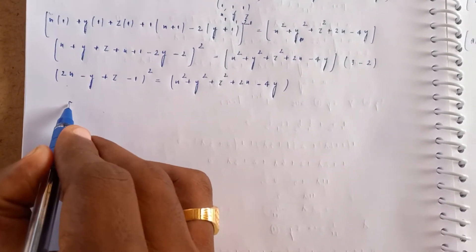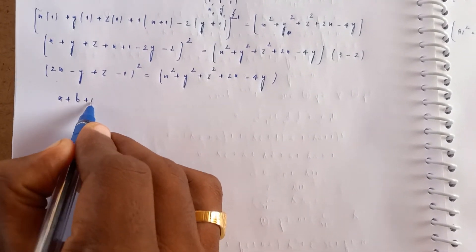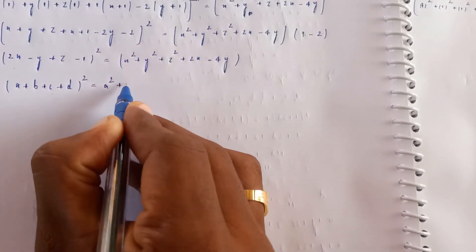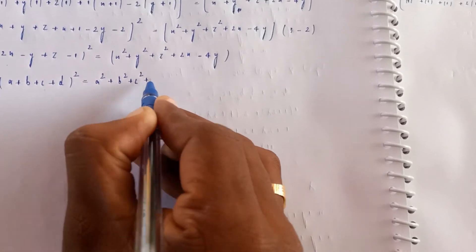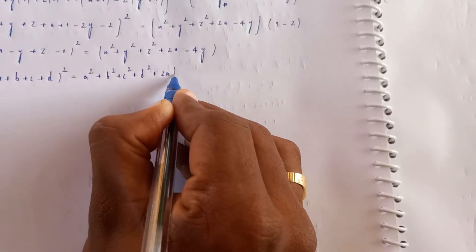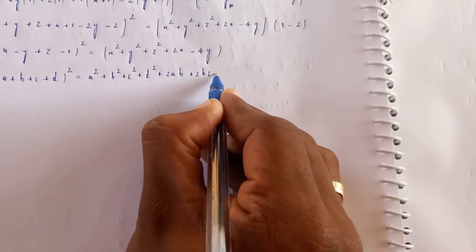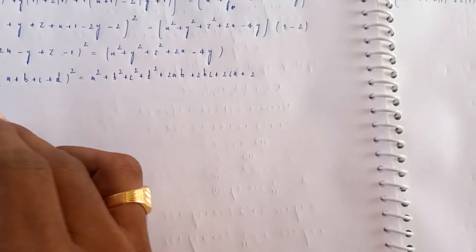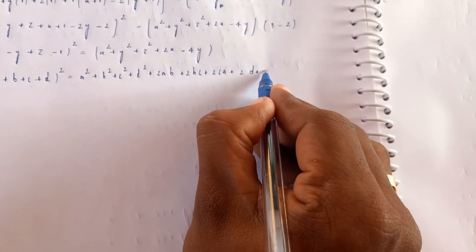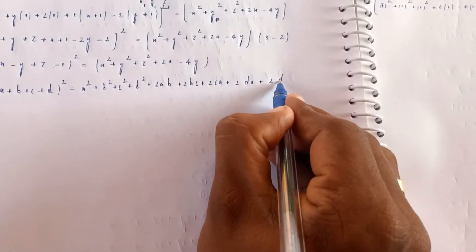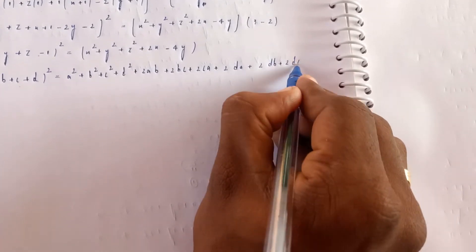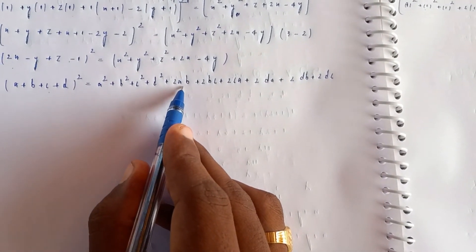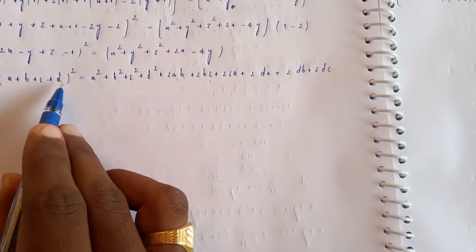We apply the (a + b + c + d)² formula: a² + b² + c² + d² + 2ab + 2bc + 2cd + 2da + 2db + 2dc. Where a = 2x, b = y, c = z, d = -1.